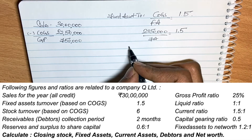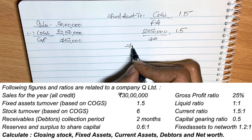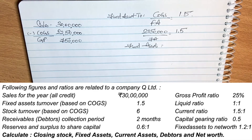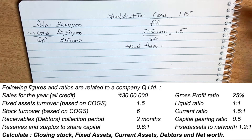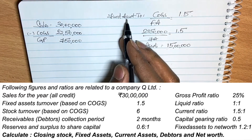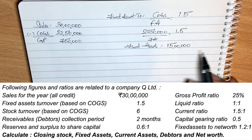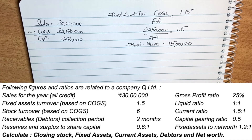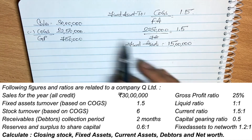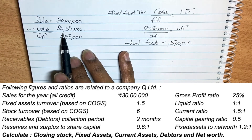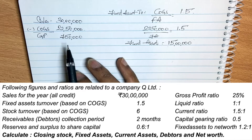Now we can calculate fixed assets. Fixed assets equals 22,50,000 divided by 1.5, which gives us fixed assets of 15 lakhs. So 15 lakhs multiplied by 1.5 converts back to cost of goods sold of 22,50,000.